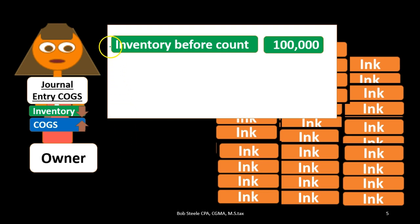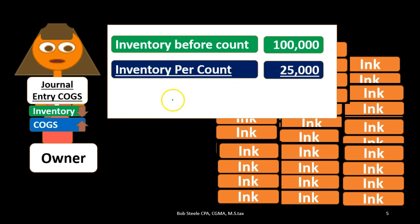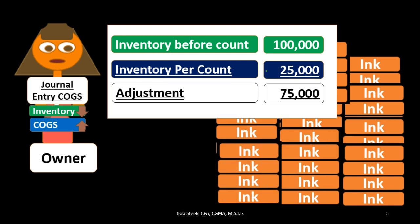We'll say the inventory before the count — including beginning inventory plus all purchases, which we recorded — is, say, $100,000. Then we do the physical count and find the inventory per count is $25,000. We subtract the two and assume we sold $75,000 worth of inventory. That would be the cost of goods sold adjustment: debit cost of goods sold for $75,000 and credit inventory for $75,000.